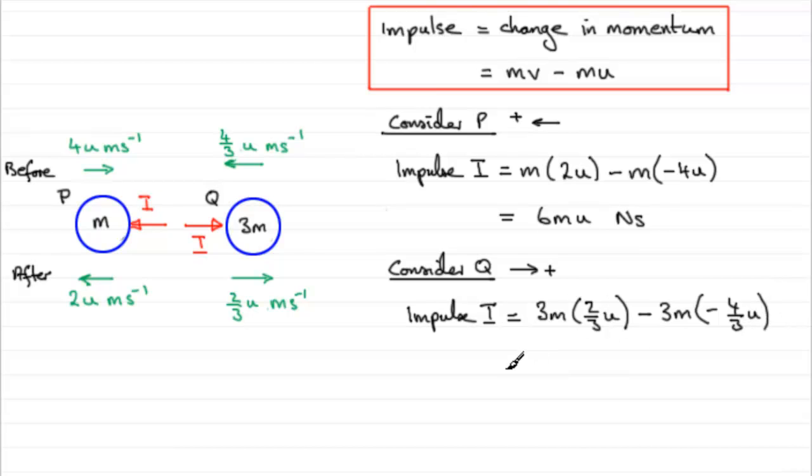Now if we work out what the first term is, we end up with the 3's cancelling. So we just end up with 2mu. And then we've got the two minuses there. Replace with a plus. And the 3's cancel, leaving us with 4mu. And if we add those two together, you can see you've got 6mu. Same answer as before. Showing that the value of I, the impulse, was exactly the same but in opposite directions. So you could use either particle. It doesn't matter to work out what that impulse is.